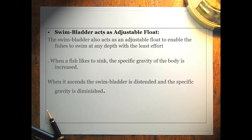The swim bladder also acts as an adjustable float to enable fishes to swim at any depth with minimal effort. When a fish wants to sink, the specific gravity of the body is increased. With the opposite action, the swim bladder is distended and the specific gravity is diminished.